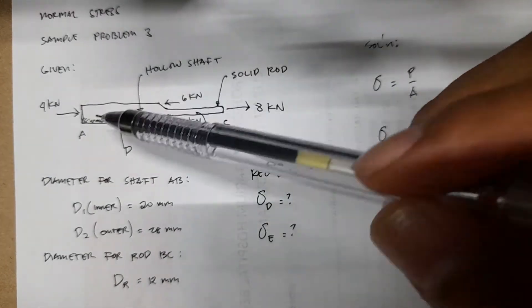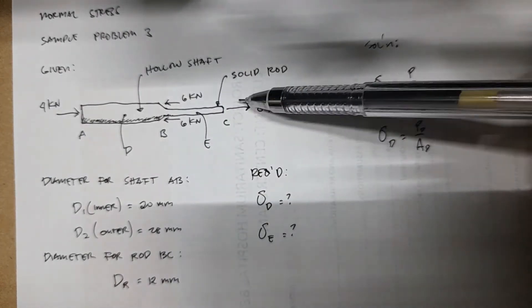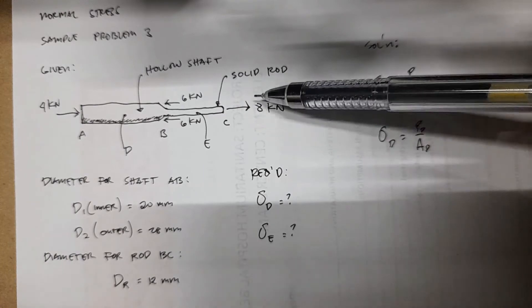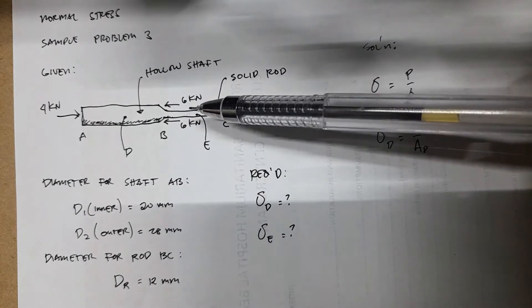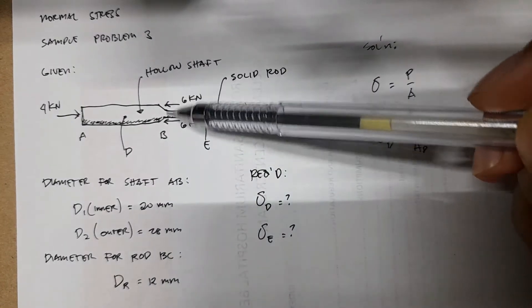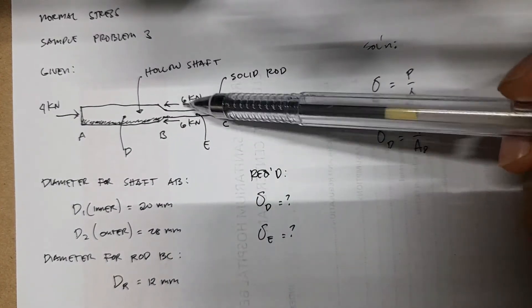You also have external forces. We have a tension force here, 8 kN at point C. Then you have a compressive force at point A, and then you have compressive forces at point B, 6 kN.